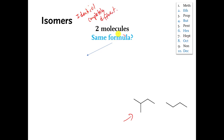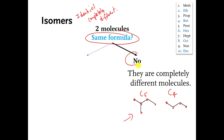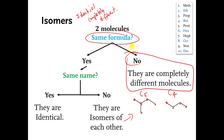First thing you do is ask: do they have the same formula? Well, this one has 5 carbons and this one has 4 carbons. They don't even have the same formula, so the answer to the first question is no. These things are completely different molecules — they can't be isomers and they can't be identical if they have different formulas.